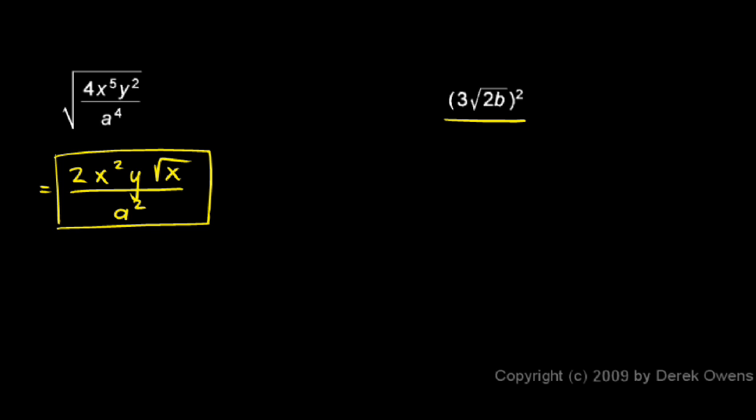Here I have 3 times the square root of 2b, all of that, squared. So when I have more than one thing multiplied together in a group here, then that group is raised to a power. Then that power applies to each factor in the group.